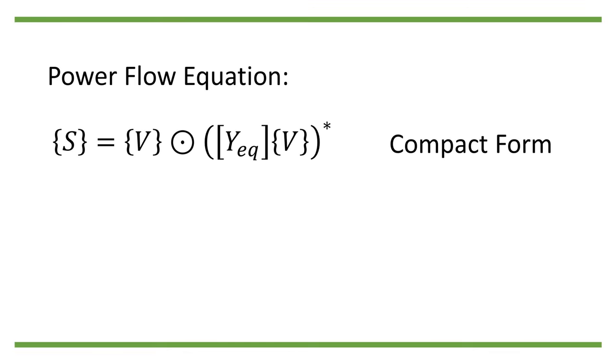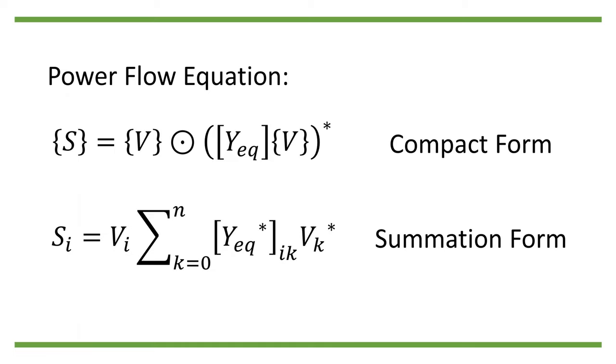We have seen the power flow equation in the complex form: S equals V entry-wise dot Y_eq V conjugate. To solve the power flow equation, it would be better to write the equation in the summation form. For every node i, S_i equals V_i times summation of k from 0 to n of Y_eq_ik conjugate times V_k conjugate.